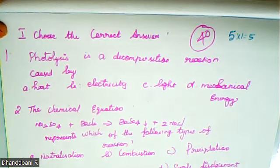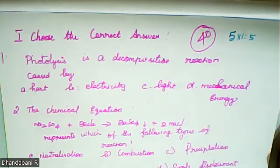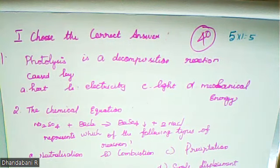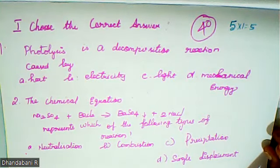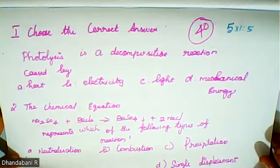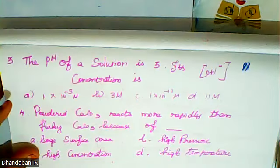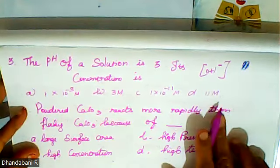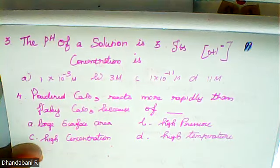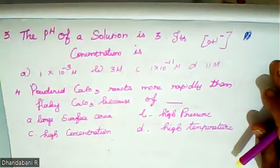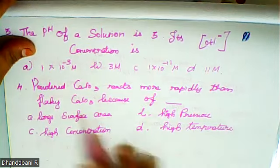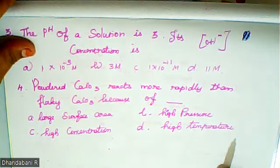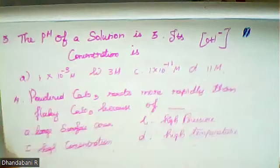Second: choose the correct answer. In the chemical equation Ni2SO4 + BaCl2 → BaSO4 + 2NaCl, which type of reaction does this represent: neutralization, combustion, precipitation, or single displacement? Third question: pH of the solution — if OH− concentration is what? Fourth: powdered CaCO3 reacts more rapidly than flaky CaCO3 because of large surface area, high pressure, high concentration, or high temperature.